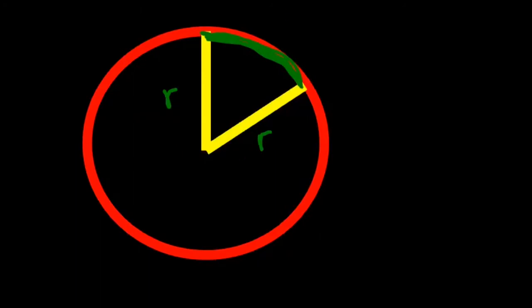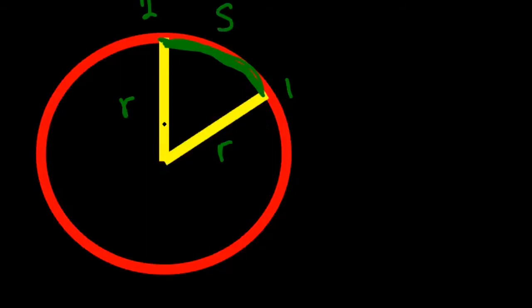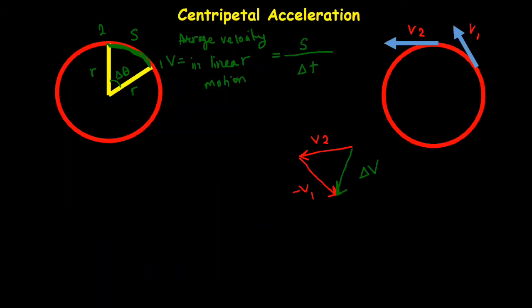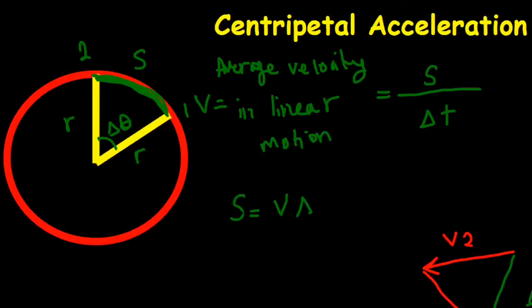As you can see, this is the radius of our circle that is equal R. And if the object that is rotating, moving from point 1 to point 2, actually the distance that it travels is from this point that is arc of this circle that we showed with S. And if I show the angle with Δθ, it means the object travels angle with Δθ. And the distance traveled is S. And as you know, average velocity in linear motion is equal S distance travel divided by ΔT. I can say S equal V ΔT.